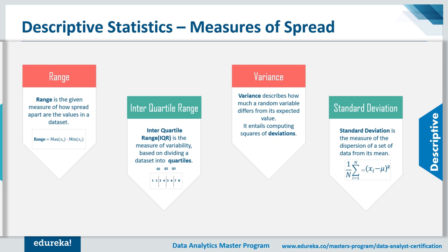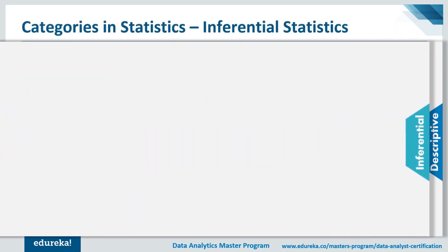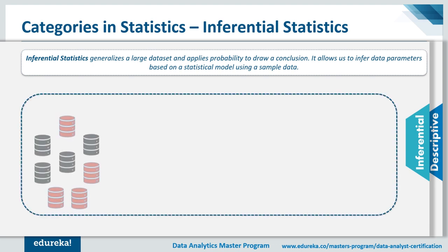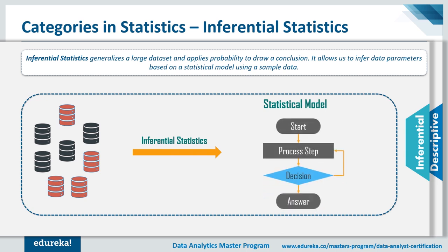Moving on to inferential statistics, the second category — it is used to build a model and give a probable solution. Inferential statistics generalizes a large dataset and applies probability to draw a conclusion. It allows us to infer data parameters based on a statistical model using a sample dataset. For example, using the same class height scenario, you'd group students into tall, average, and short height, build a statistical model, and expand it for the entire population.